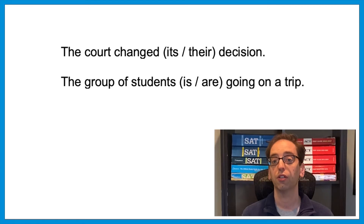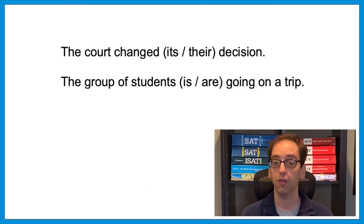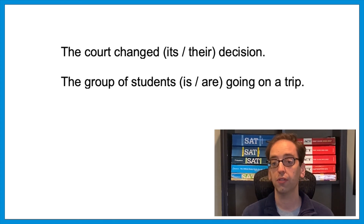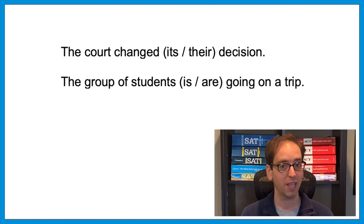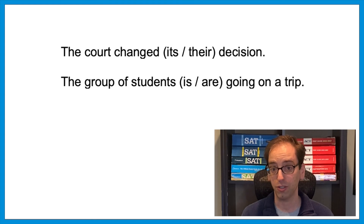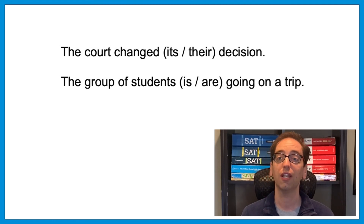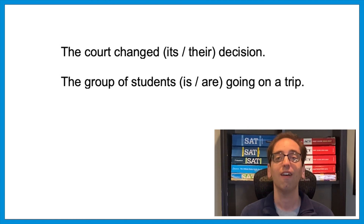The concept of making things match also appears in other grammar rules. For example: 'The court changed blank decision.' The court is singular, so you need a singular pronoun — 'its.' And: 'The group of students blank going on a trip.' Most students say 'are' because their ear hears 'students are,' but careful — when you have 'noun one of noun two,' focus on noun one. 'The group' is doing the action, not 'the students.' Eliminate 'of students' and you get 'the group is going on a trip.' The first example matches a pronoun to its antecedent; the second matches a subject to its verb.